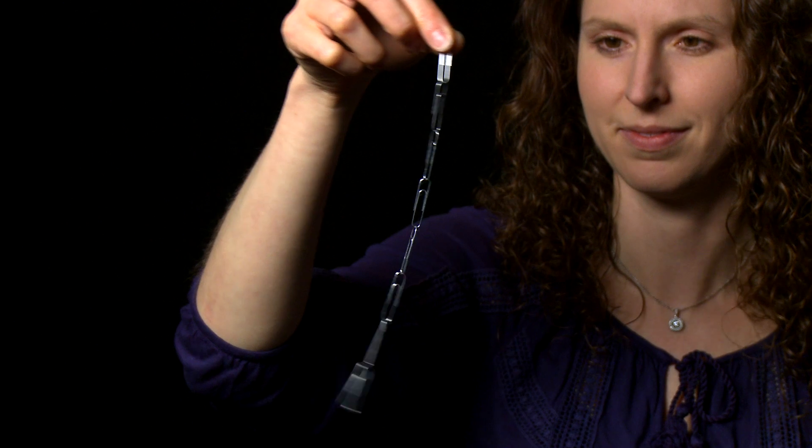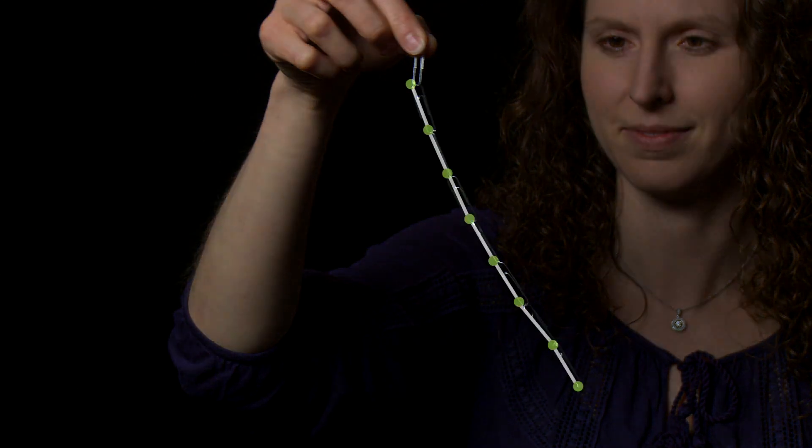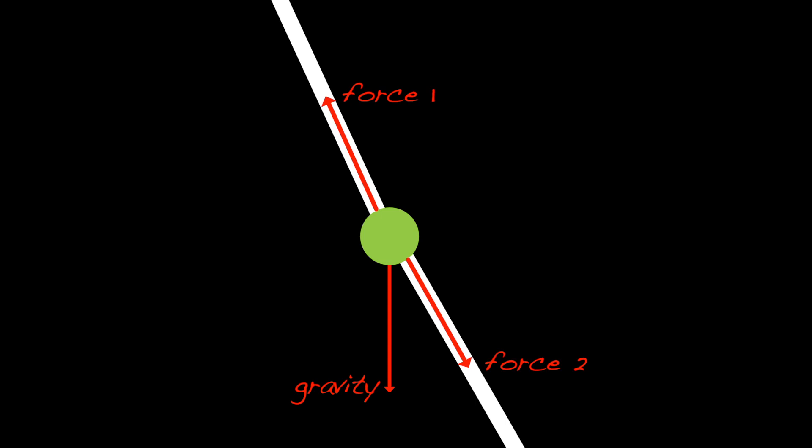We first draw a series of line segments connected to particles. The computer needs to calculate the positions of these particles, but first we need to describe what forces are acting on them. In the real world, each particle is affected by three forces: the force of gravity and the forces from neighboring connections.